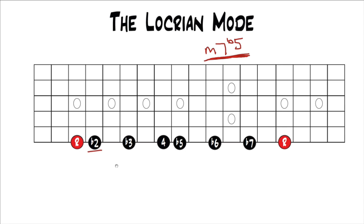Avoid doesn't mean don't play it — just when you land on it, it wants to go somewhere else instead of resting on that flat 2. The reason the flat 2 is the avoid note is because if you're playing over a minor 7 flat 5 or even a diminished triad — root, flat 3, flat 5, flat 7 — that flat 2 is a minor second away from the root, which is a very dissonant interval. But this whole scale is pretty dissonant, so you just have to really use your ears to listen to the best way to use it.